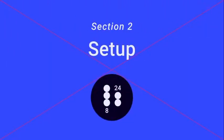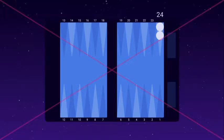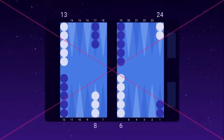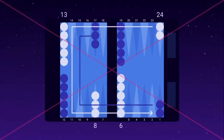Section 2: Setup. White player has 2 checkers on 24, the backmost checkers, 5 checkers on 13, the midpoint, 3 checkers on 8, and 5 checkers on 6. Blue's checkers are placed opposite of white's. White moves counterclockwise, and blue moves clockwise.